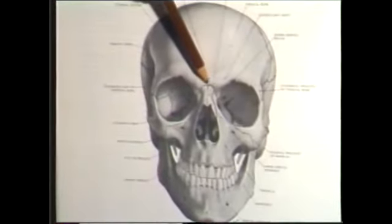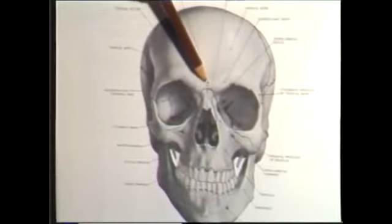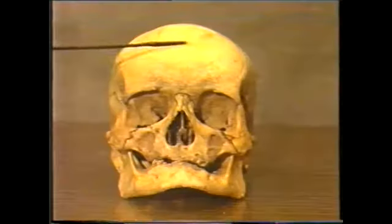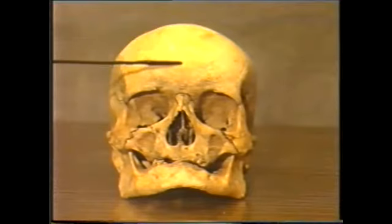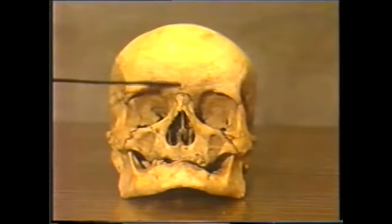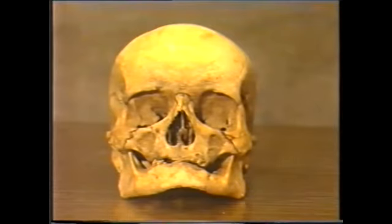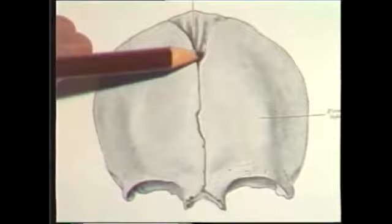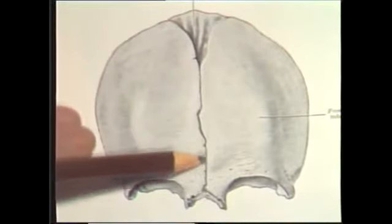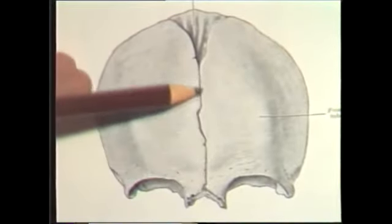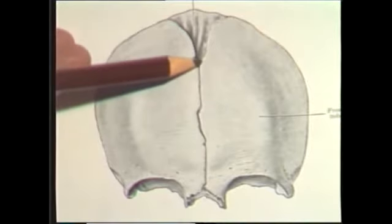In the child, the frontal bone is formed of two halves that articulate together in the median plane. The two halves fuse together by about the eighth year after birth, with disappearance of the intervening suture. But in some cases, this suture may persist in the adult and is called the metopic suture.